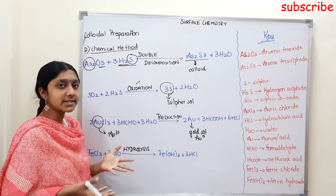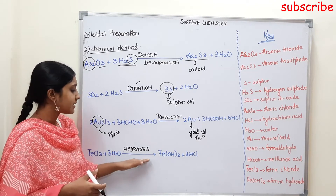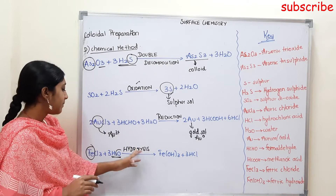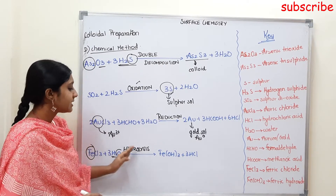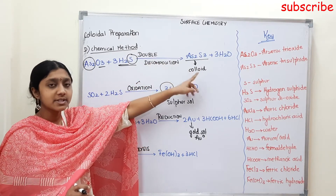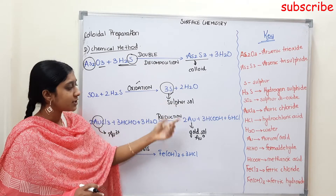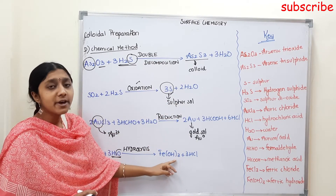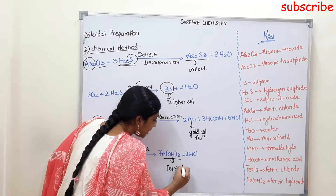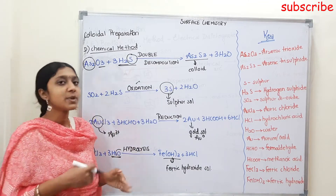Finally, the fourth reaction is Hydrolysis. In the presence of water, FeCl3 (Ferric Chloride) is mixed in water. Fe reacts with H2O to give Fe(OH)3 and HCl. This process is Hydrolysis. So to summarize the chemical methods: Double Decomposition gives Arsenic Trisulfide sol, Oxidation gives Sulfur sol, Reduction gives Gold sol, and Hydrolysis gives Ferric Hydroxide sol.